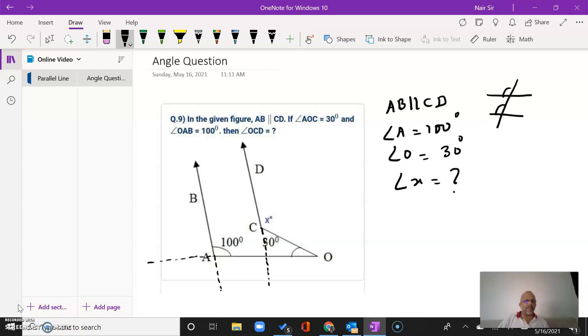Similarly, angle A and if I name this as E, angle E are corresponding angles. Angle A is equal to angle E, and that is equal to 100 degrees. That's the first thing.